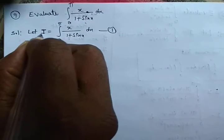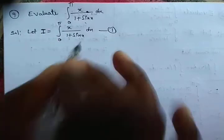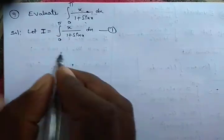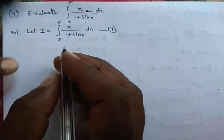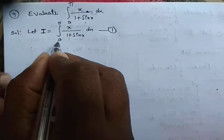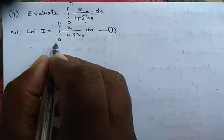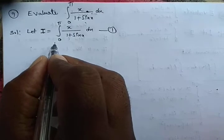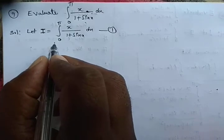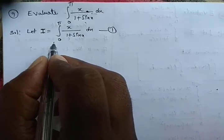The question is how much integration is in this definite integral. Since the lower limit is 0, we frequently use a specific property. I am going to use that property here and write it again.